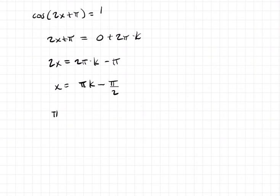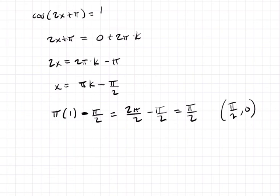if k is 1, then you have pi times 1 minus pi over 2, which equals 2 pi over 2 minus pi over 2, which equals pi over 2. And that was true. If you're on the graph, if you plug in pi over 2 to g, the output is 0.